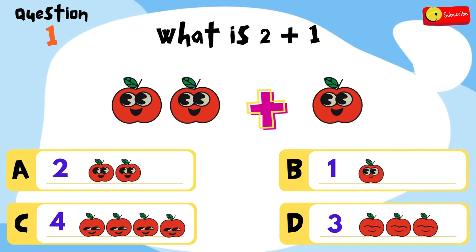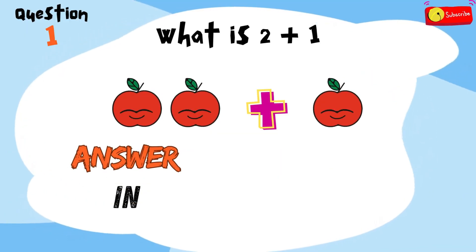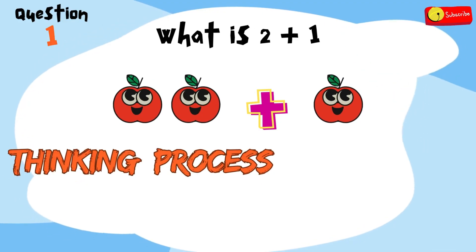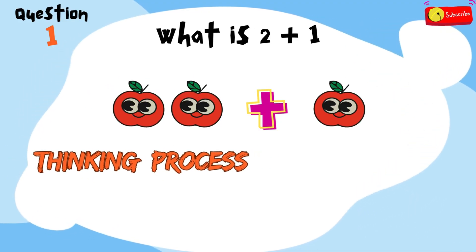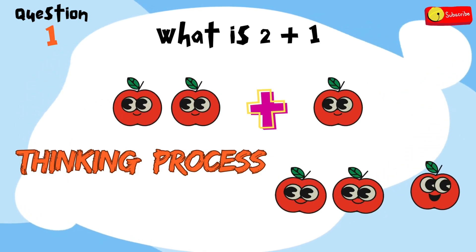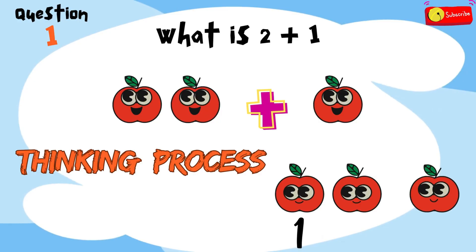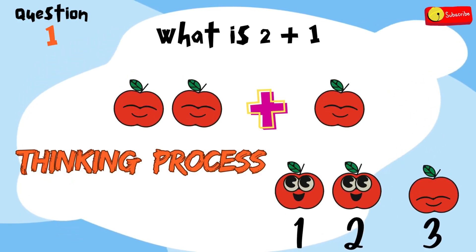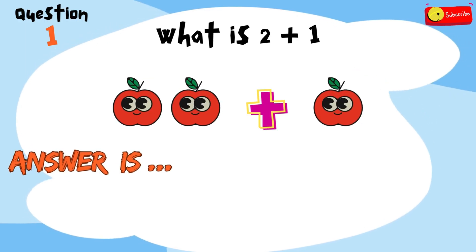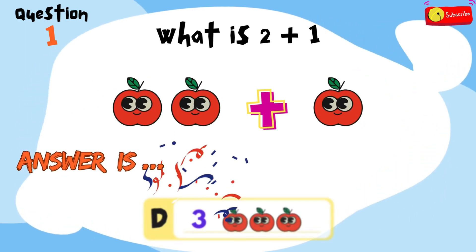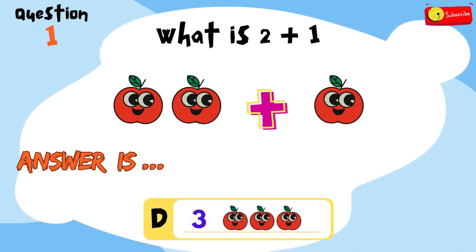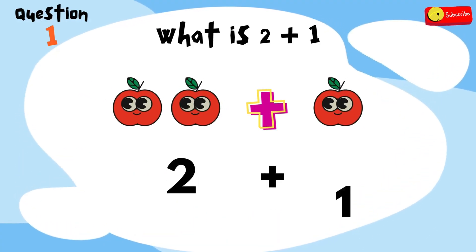All right, time's up! Here's the thinking process: if you have two apples and we add one more, in total we get 1, 2, 3. So the answer is D — 3 apples. So, 2 plus 1 equals 3.